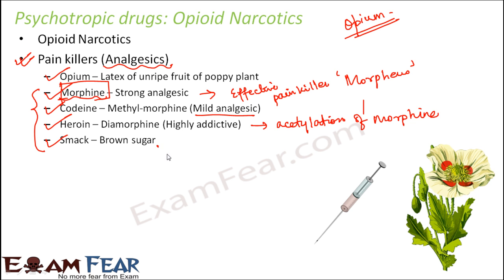Smack is also known as poor man's heroin because it is comparatively cheaper than heroin. Once people start taking heroin or smack they get totally addicted and continue taking them, which results in several diseases. Smack is actually a stronger analgesic than morphine. Out of all the painkillers discussed, morphine and codeine find uses in the medicinal industry, whereas heroin and smack are addictive drugs that one should definitely stay away from.